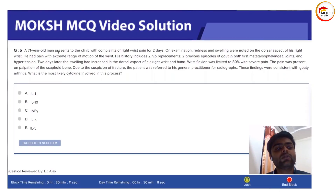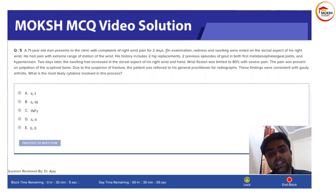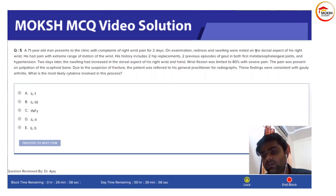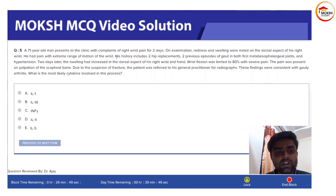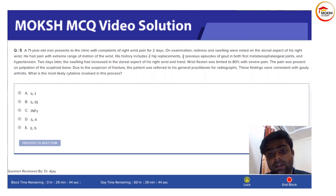A 71-year-old man presents to the clinic with a complaint of right wrist pain for two days. On examination, redness and swelling were noted on the dorsum of his right wrist. He had pain with extreme range of motion of the wrist.